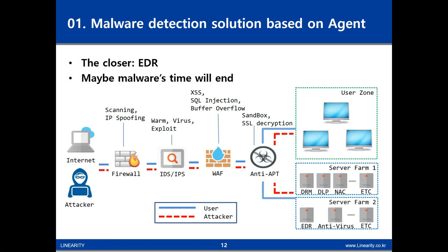DLP is the solution that detects when and which files were taken out by the user via USB and email. Print-out security solution lets you know which document the user has printed, and a captured copy of the document is sent to the server. It may feel unusual to some people, but it is more effective than network-level solutions in security efficiency. But with EDR out, there may be another paradigm shift. It would be very difficult for attackers to bypass EDR, and EDR will be taken for granted like antivirus.